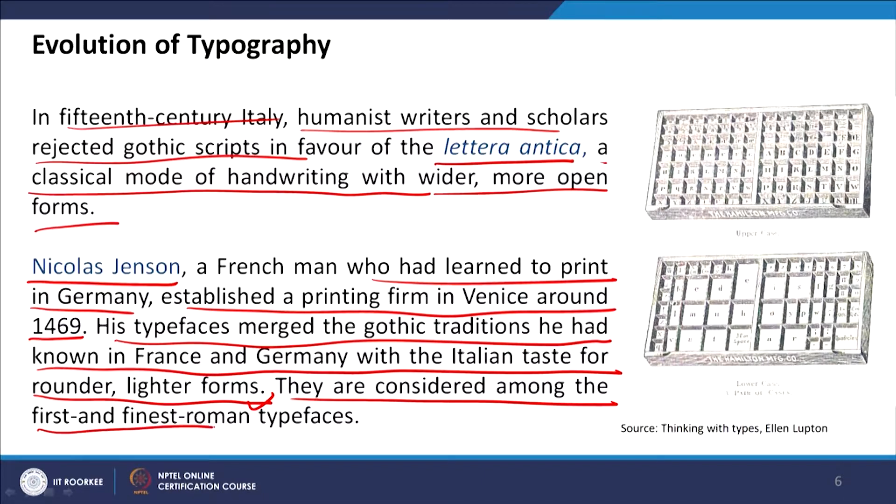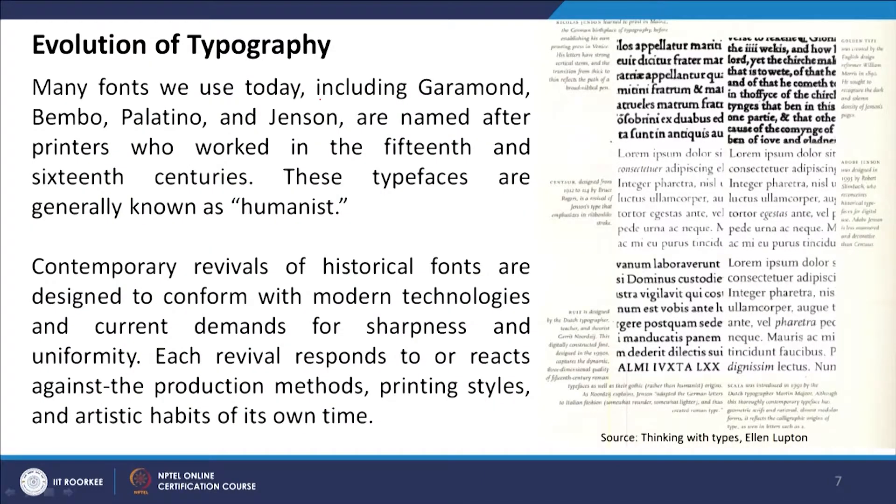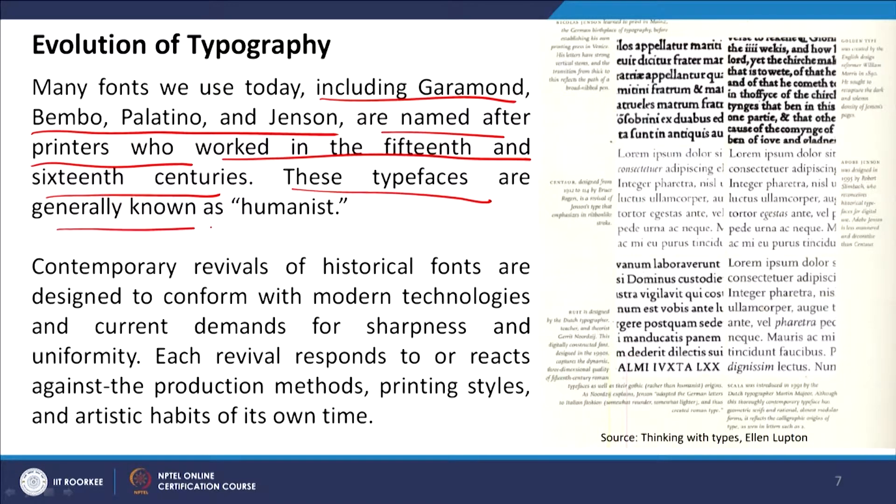These are considered among the first and finest Roman typefaces. Many fonts we use today — including Garamond, Bembo, Palatino, and Jenson — are named after the printers who worked in the fifteenth and sixteenth centuries. These typefaces are generally known as humanist. Humanist typefaces, gradually translating from the gothic style, are much more minimal in nature, but still retain the calligraphic style. The stroke thickness varies, which gives a human touch and does not look like a digital typeface.